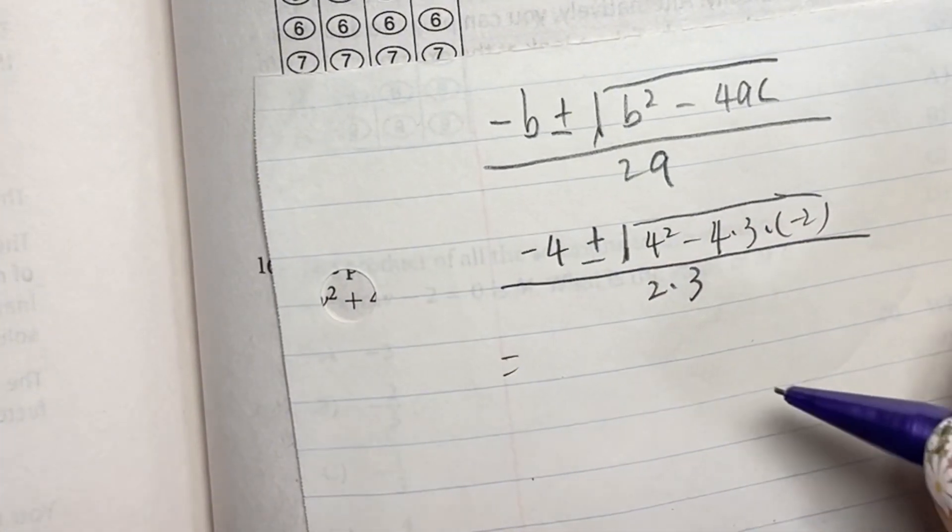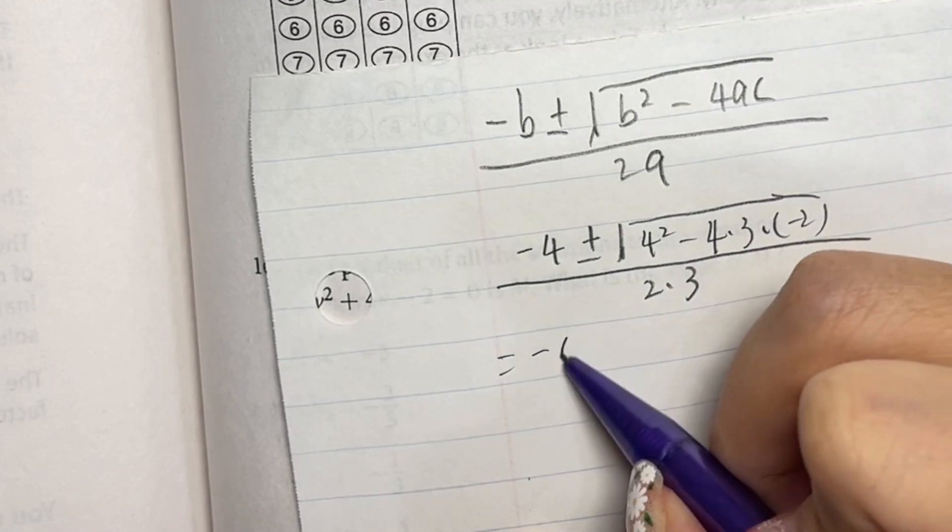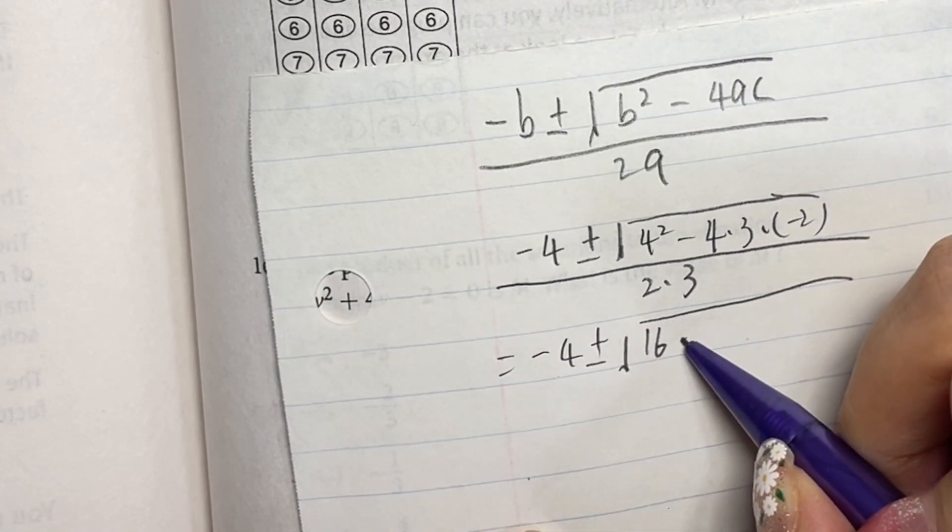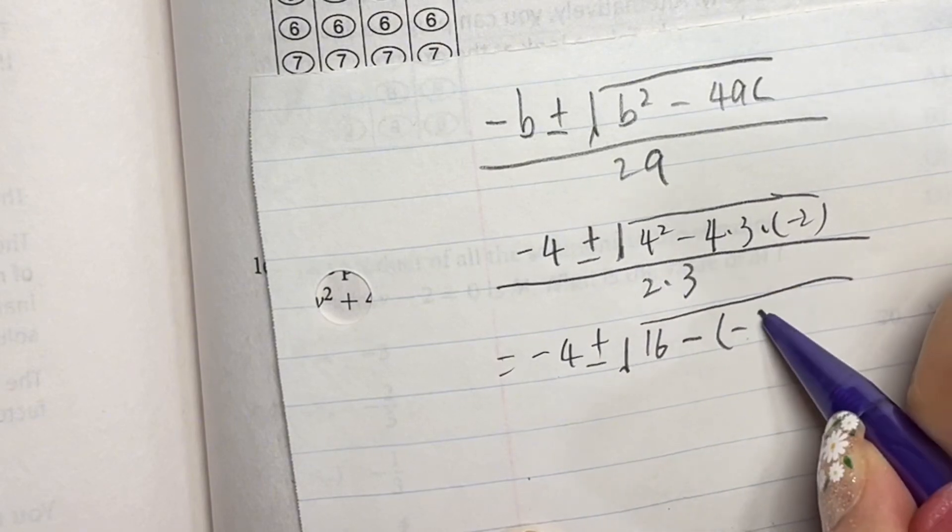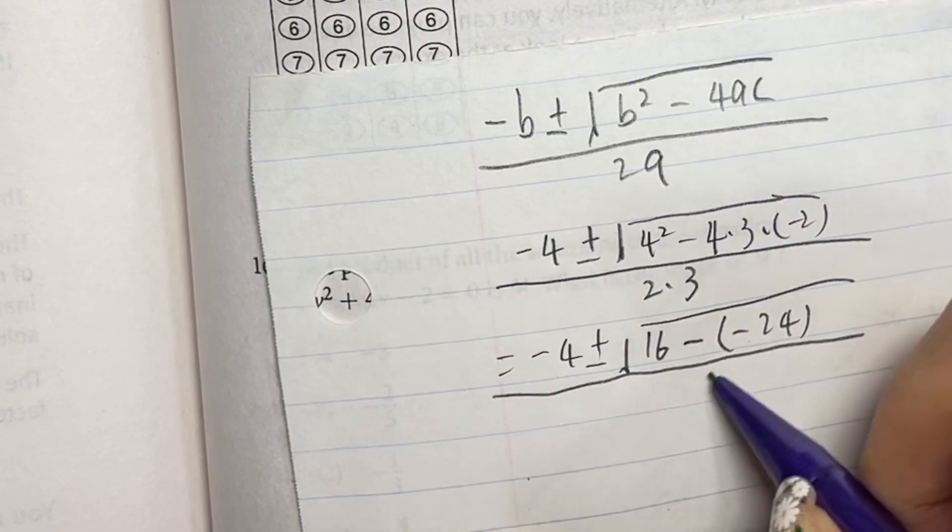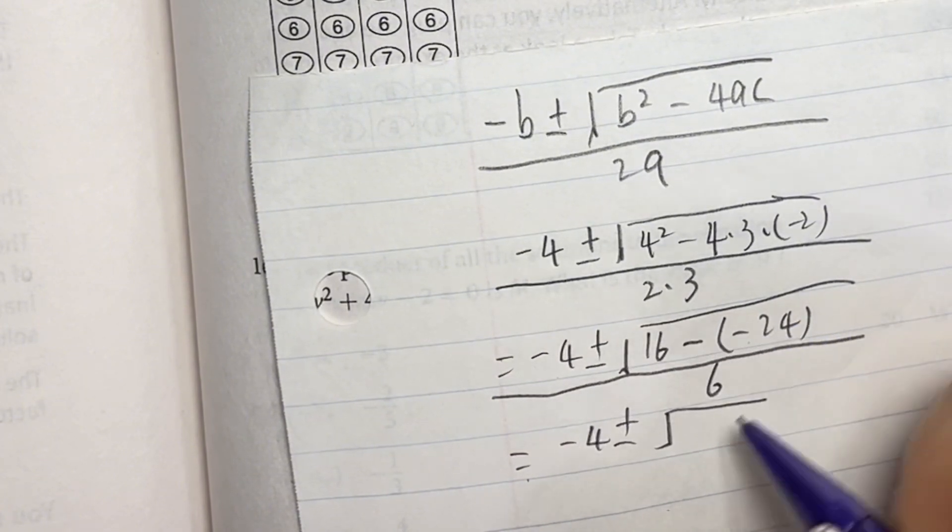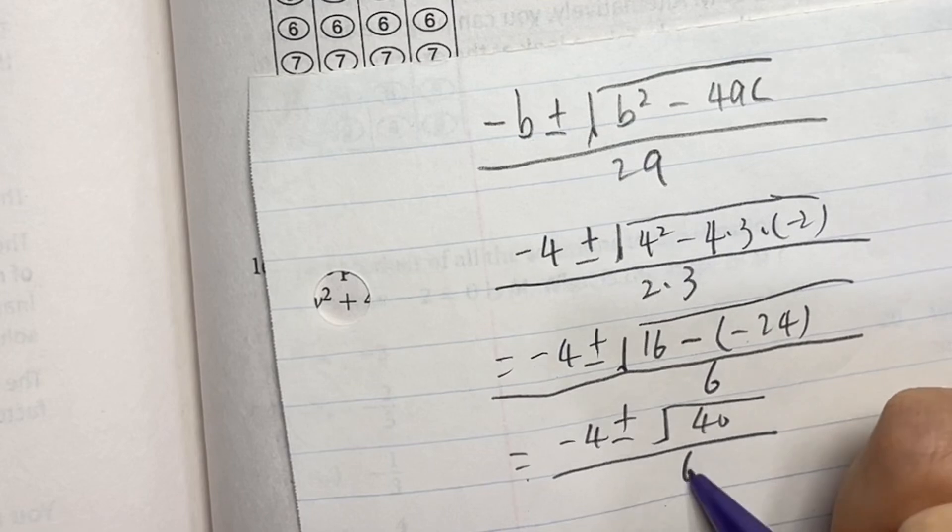Now this equation becomes -4 ± √(16 - (-24)) divided by 6. So -4 ± what's inside the square root is 40, divided by 6.